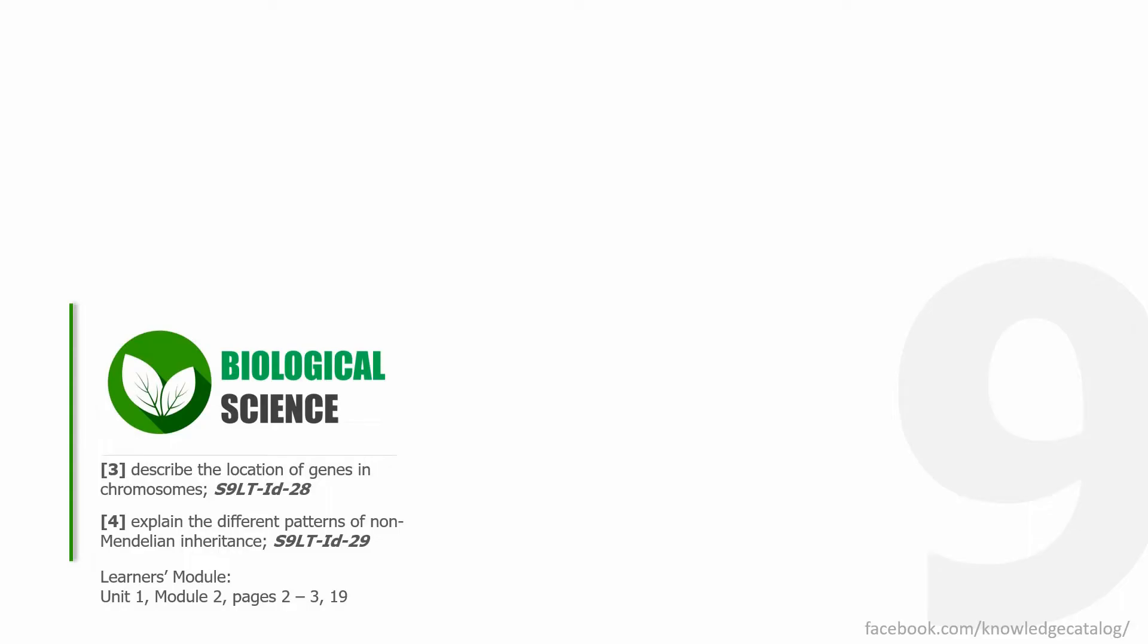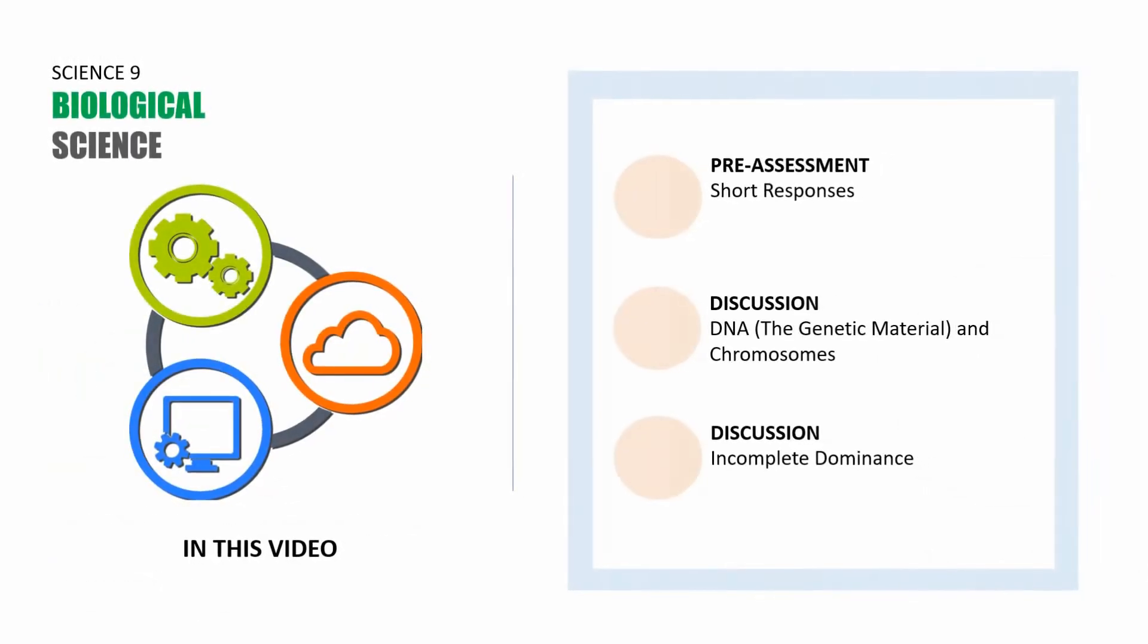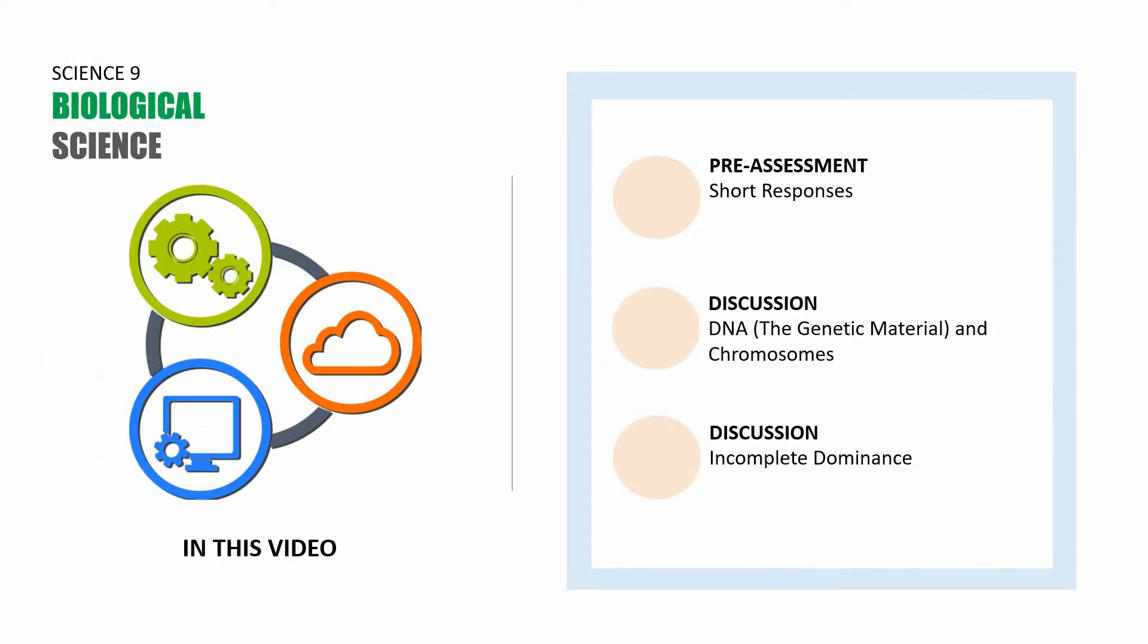Let's begin. The following are the parts of this session. The first part is a pre-assessment which corresponds to short responses and then discussion regarding the DNA with the genetic material and chromosomes and then a discussion about incomplete dominance. Realize as well that this is a new module, so this is module 2 and we're done in the first module.